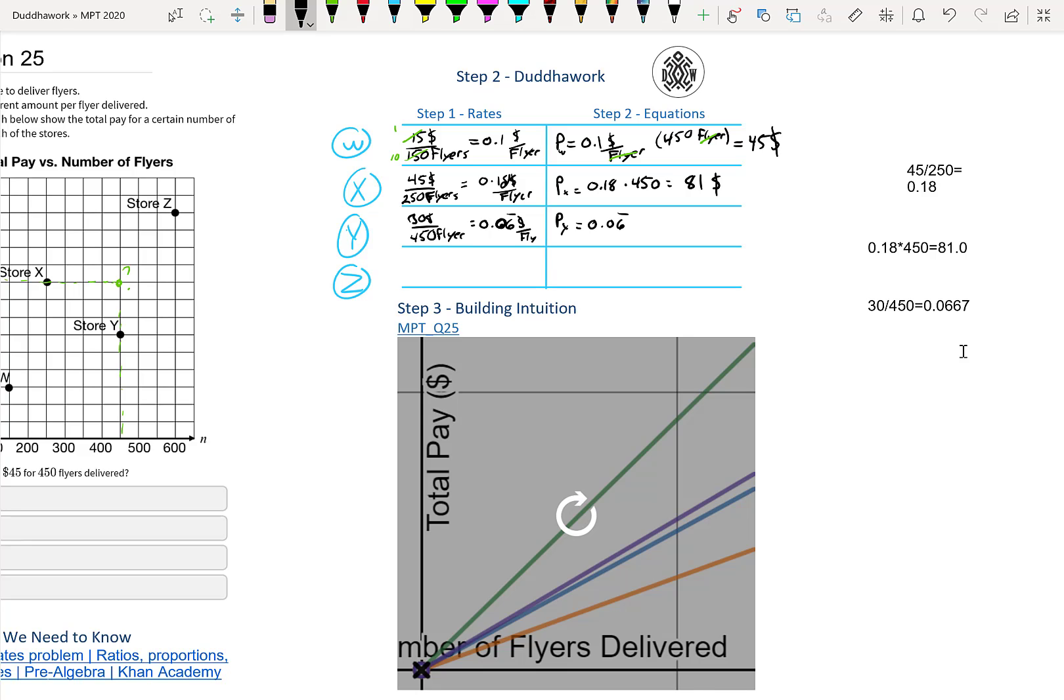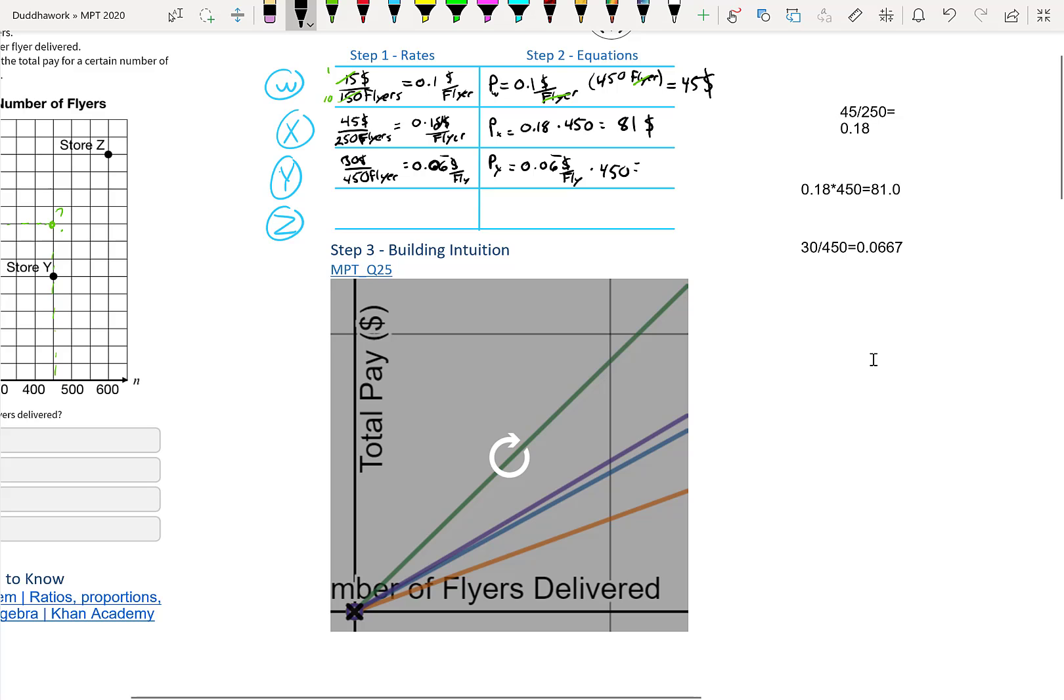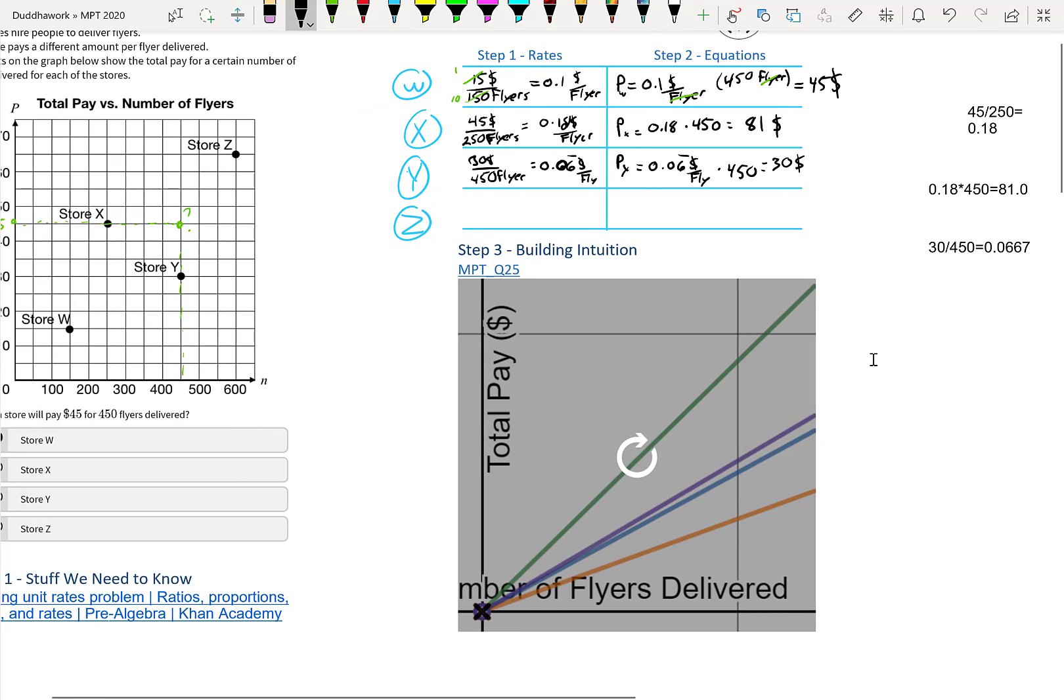And then $0.06 per flyer times 450. So really what we do here is we have this rate and then we multiply it by 450, which will just be $30. Because when we do the math, the $30 divided by 450 times 450, the 450s cancel. So you'll just have $30. Again, it makes sense because it's the lowest paying store. The lowest rate gives you the lowest total salary.